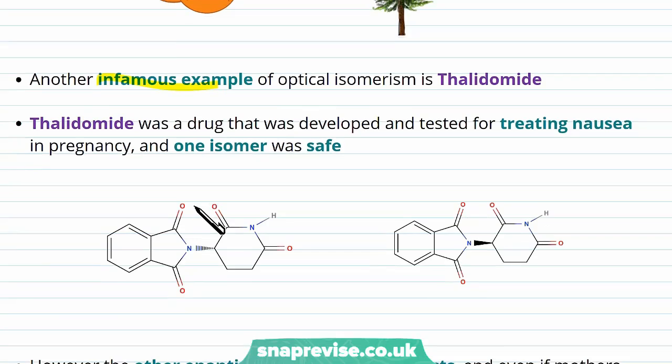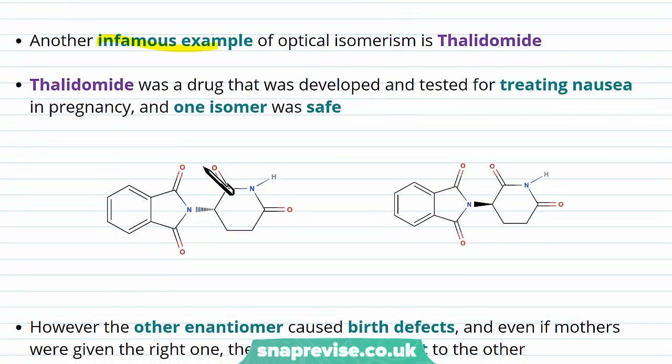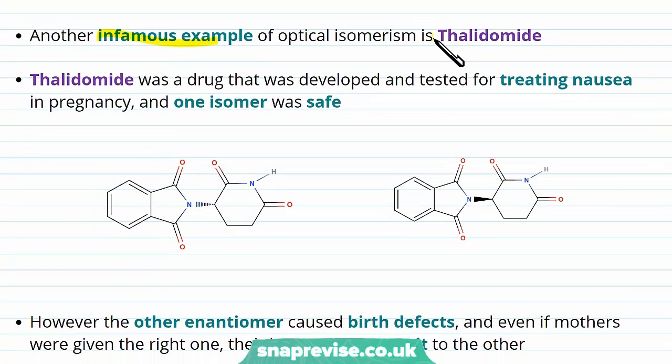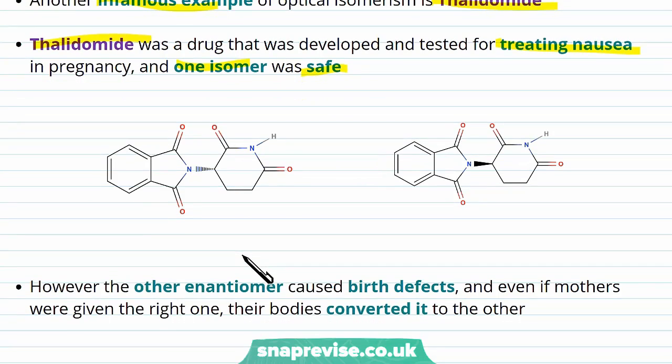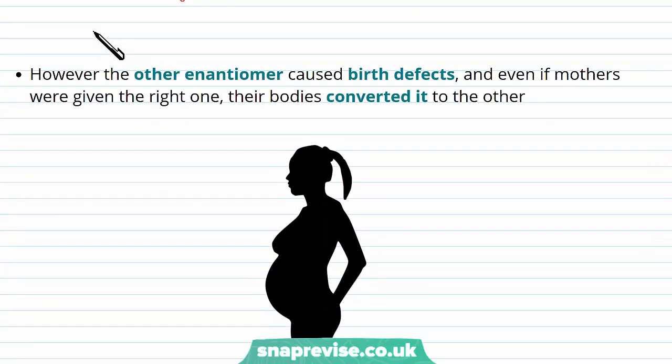An infamous example of this type of isomerism acting differently in biology is thalidomide. You may have heard of thalidomide, which was a drug that was developed and tested for treating nausea in pregnant women. One of the isomers was safe, however the other isomer was incredibly dangerous.